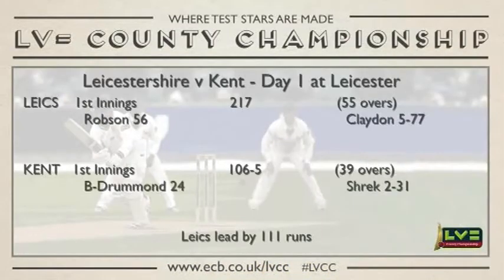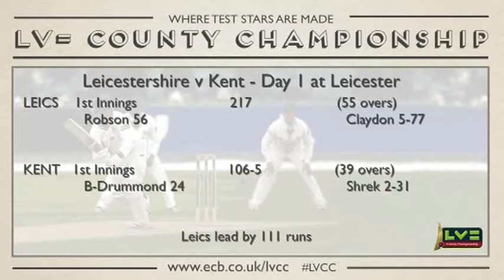Stevens and Ball then blocked out the final half-hour of a fascinating day on which 15 wickets fell and the game moved on at a pace. Kent will go again on the second morning on 106 for five, which means they'll start trailing by 111 runs, with a real battle on to earn a first innings advantage.